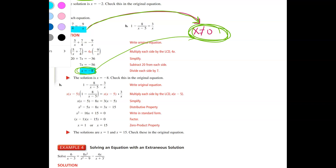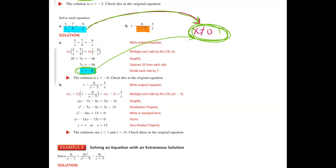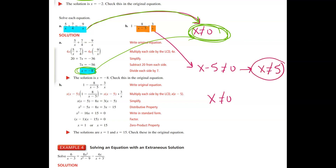In problem b, I just have to make sure that whatever I get for x, the denominator x minus five isn't zero and the denominator x isn't zero. So I need my answer to not be five and not be zero. They went ahead and solved and got one and fifteen — both of those work because they're neither zero nor five.